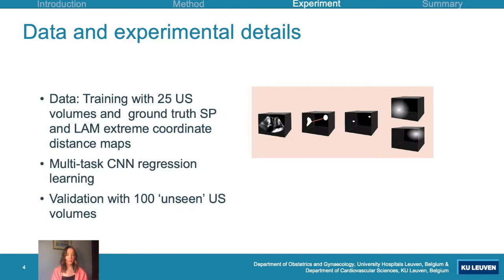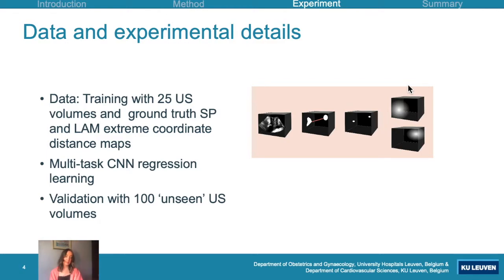To train the CNN regression model, we use a dataset of 25 ultrasound volumes with corresponding ground truth data, consisting of SP and LAM extreme coordinate distance maps, as shown in the figure here. We use a multi-task CNN regression approach to learning, and we validate on 100 unseen ultrasound volumes.